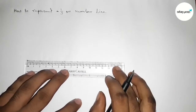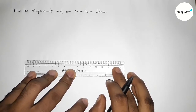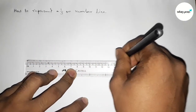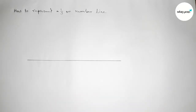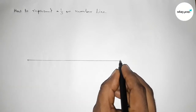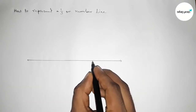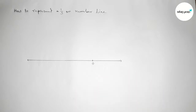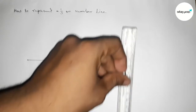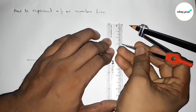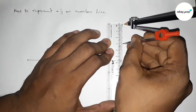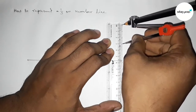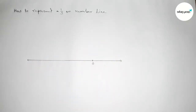First of all we have to construct a number line. Drawing a line of any length and taking arrow marks on both sides. Taking the number zero here. Now for easy calculation I'm going to use a scale — I'll take three centimeter length as one unit length and mark the numbers using this length.